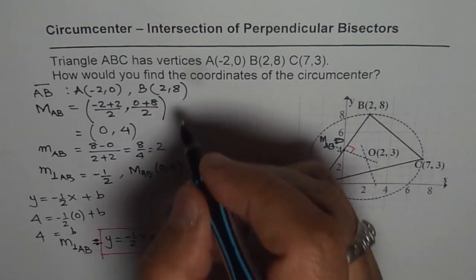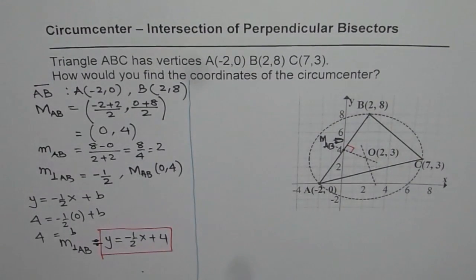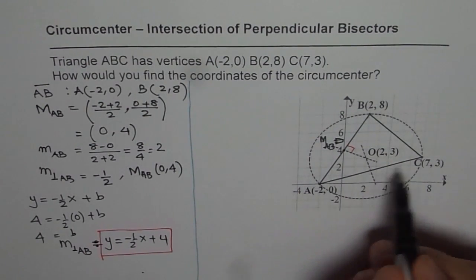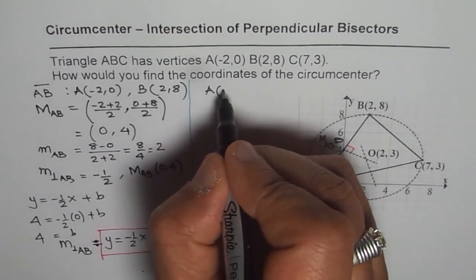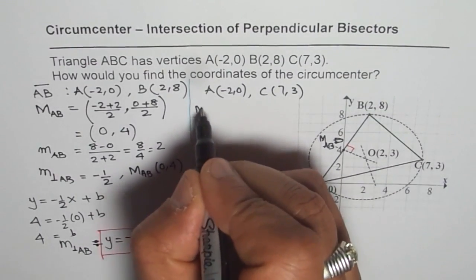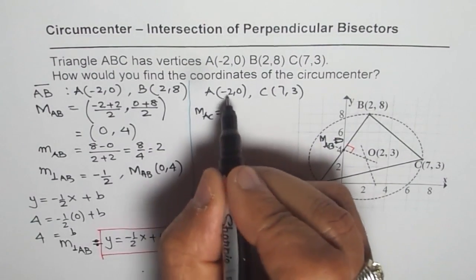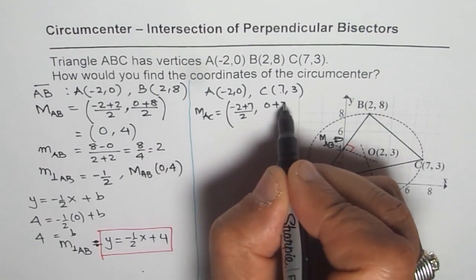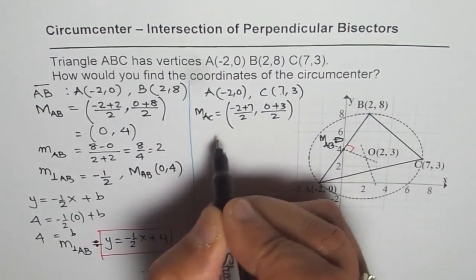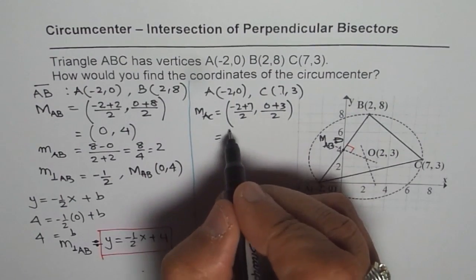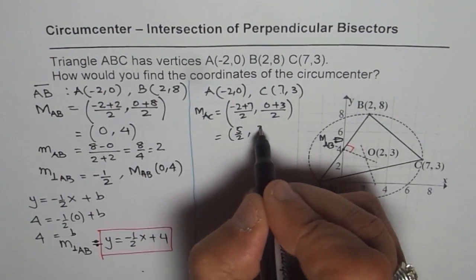Since all three perpendicular bisectors intersect at the same point, we only need to find two of them. Now let's consider side AC. Point A is (−2, 0) and C is (7, 3). The midpoint of AC is ((−2 + 7) / 2, (0 + 3) / 2), which gives us (5/2, 3/2) — we'll keep these as fractions.